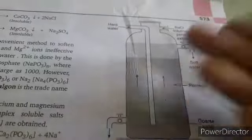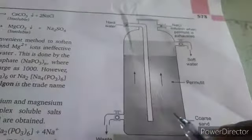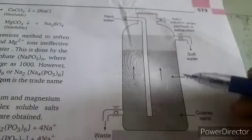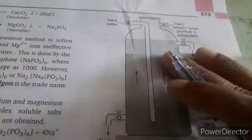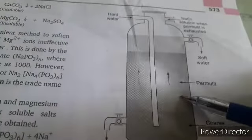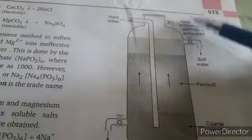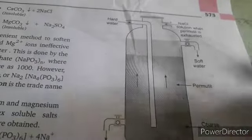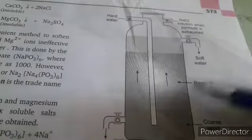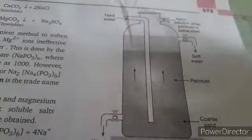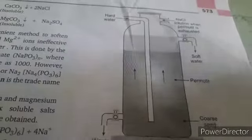After regeneration, the permutite is once again ready for use. Hard water is added again, and the permutite can be used for another 12 hours. When saturated again, NaCl is added from the top. This causes the calcium zeolite and magnesium zeolite formed during softening to be converted back to sodium zeolite, releasing calcium ions and magnesium ions as soluble salts.